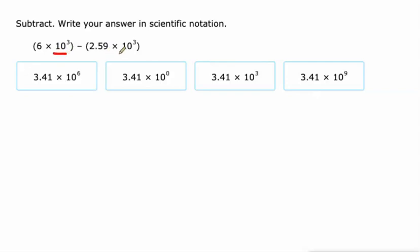So these are both in terms of 10 to the third. 10 to the third is about 1,000, so using estimation, this is 6,000 minus a little bit more than 2,000. We're definitely going to end up with a number in the thousands. 6 minus 2.59, that's 3.41, and that's our answer: 3.41 times 10 to the third.